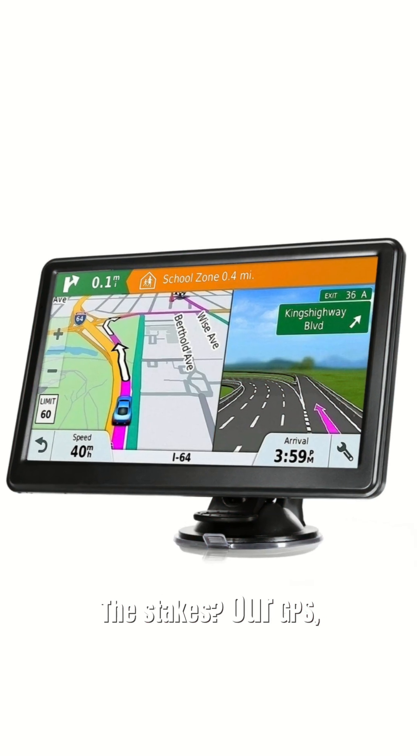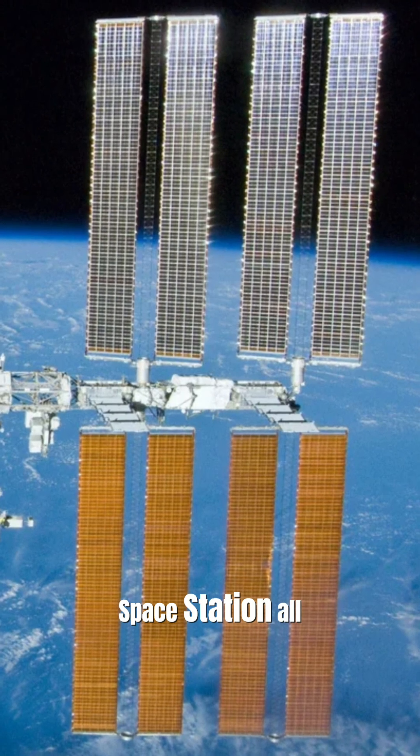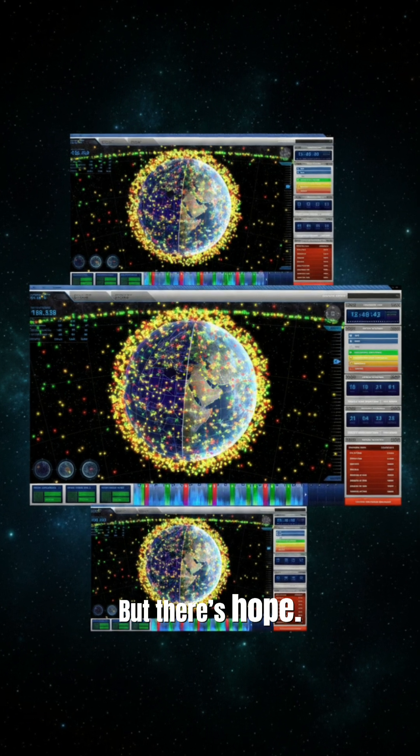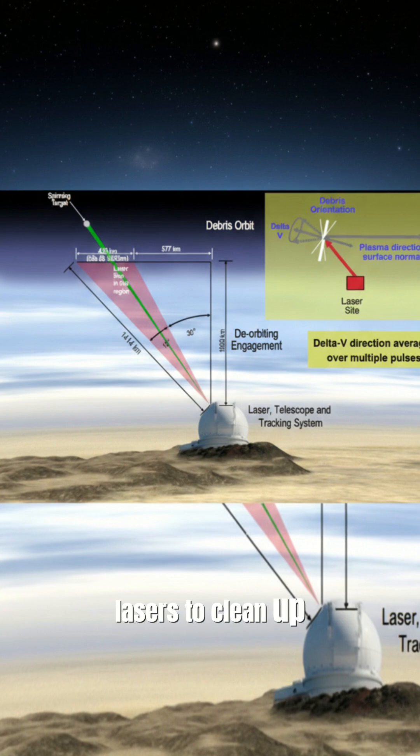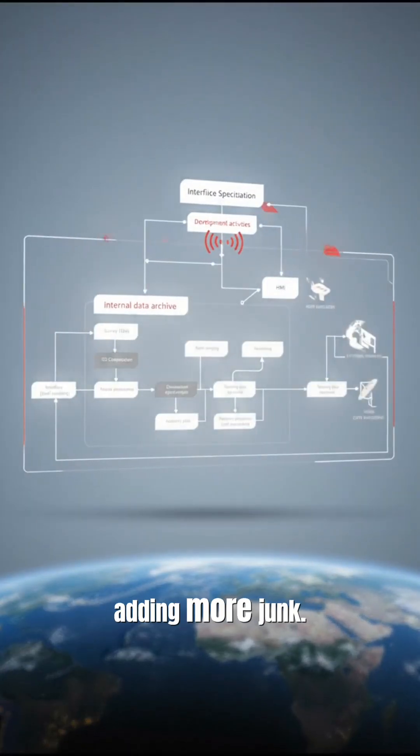The stakes, our GPS, weather forecasts, and even the International Space Station all depend on safe orbits. But there's hope. Scientists are tracking debris with radar, designing nets and lasers to clean up space, and planning smarter launches to avoid adding more junk.